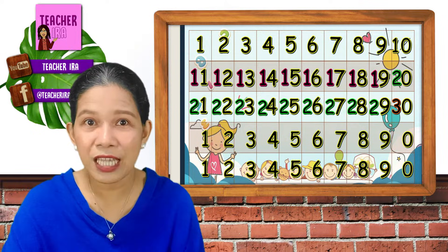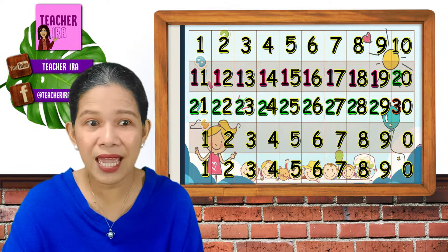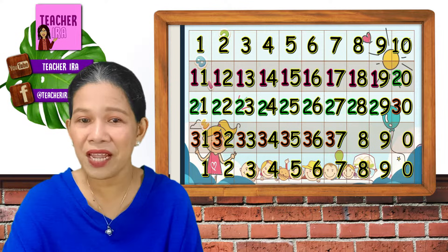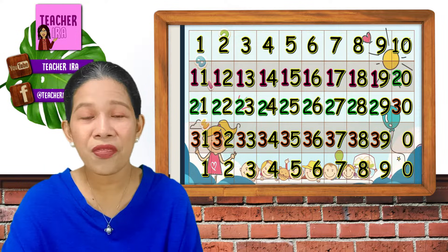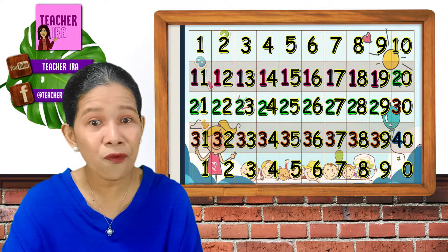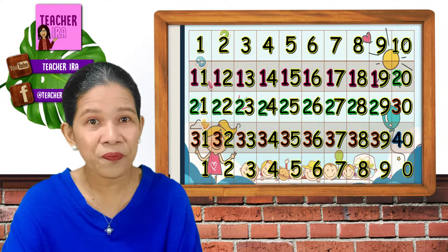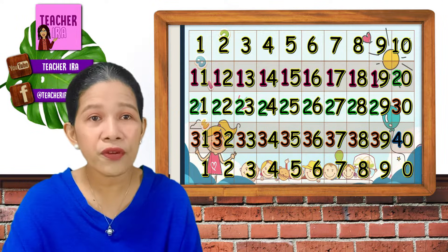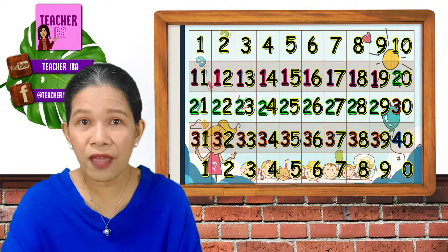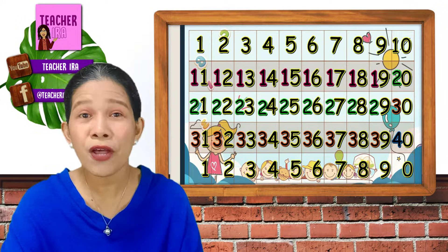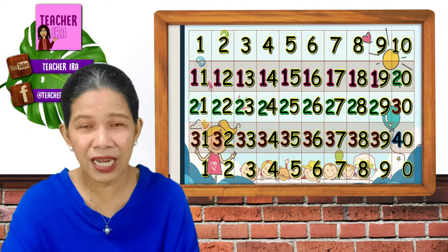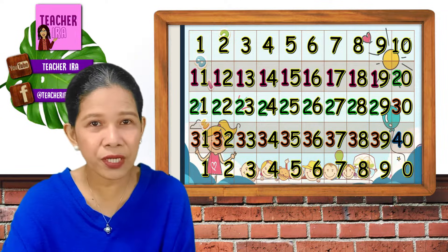Now, let's have all 3. Adding 3, 3, 3, 3, 3, 3, 3, 3, 3, 3. And now it's 4. You have 31, 32, 33, 34, 35, 36, 37, 38, 39, and 40.